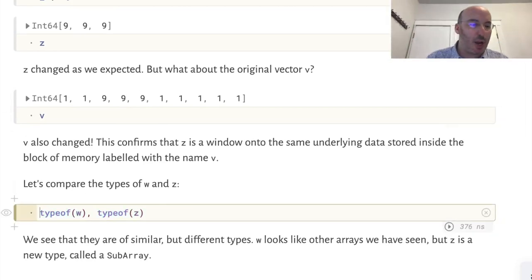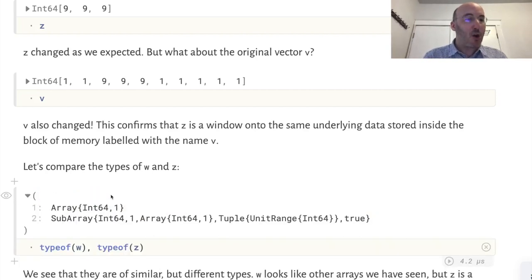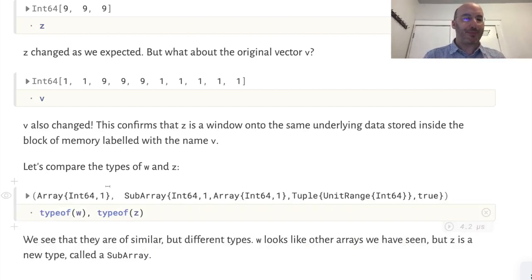Let's come back to the types. If we compare the types of these two objects, W which was the slice that makes a copy, and Z which is a view, making a copy makes an object of the same type, which is just array. But making a view makes this new type called SubArray. This whole expression is the complicated type of this new object, but we're not going to worry about the details.